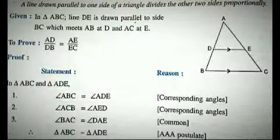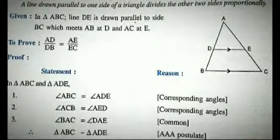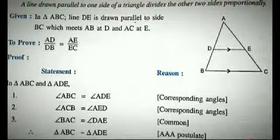We now have an introduction to the Basic Proportionality Theorem. A line segment passing through any two sides of a triangle, if parallel to the third side, divides those sides proportionally. This is the theorem to remember.